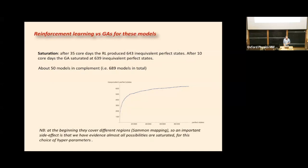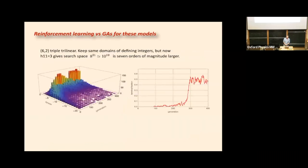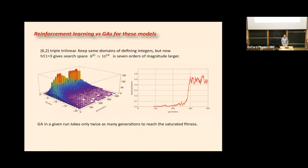We think that's an important observation and an important reason to be combining these techniques. For problems where you want to know whether you've found all the solutions — which may be unique to physicists — it's very useful. For the harder search with h_{1,1} = 3, with a bigger search space of 10^19, the genetic algorithm does run pretty fast: by generation 300 it's already finding terminal states.